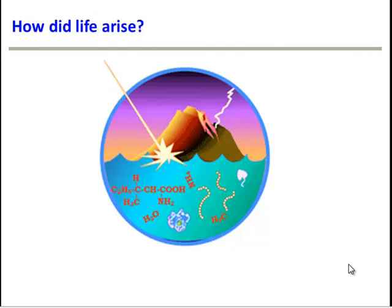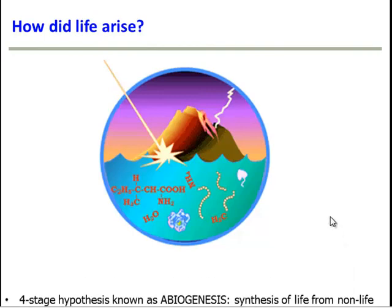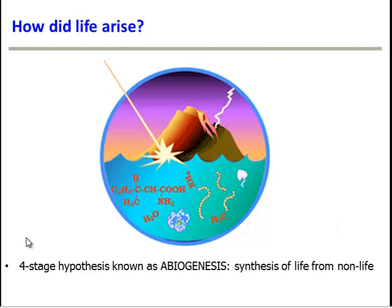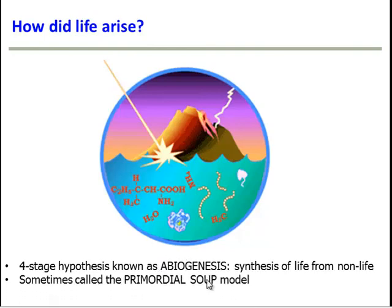So we've seen the conditions of Earth a long time ago — how did life actually arise? The current leading hypothesis is a four-stage hypothesis known as abiogenesis, essentially the synthesis or genesis of life from non-living things. This is also sometimes called the primordial soup model, based on the idea that billions of years ago, oceans and volcanoes and deep-sea vents were full of all sorts of chemicals bubbling around, and those chemicals became the building blocks of living things. As we explore the hypothesis, we'll keep in mind how the conditions of Earth billions of years ago made all this possible.